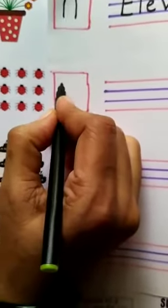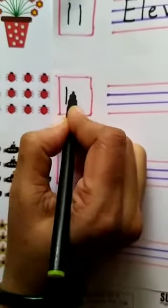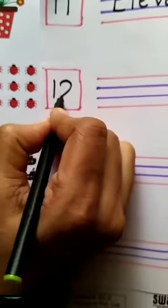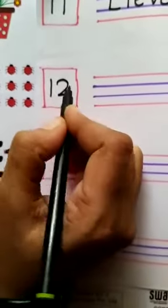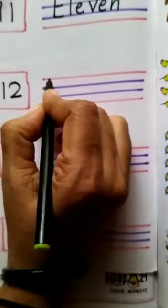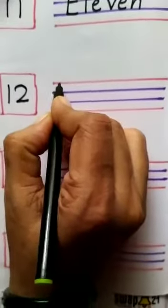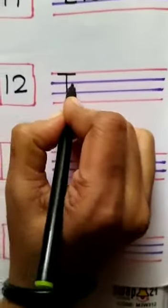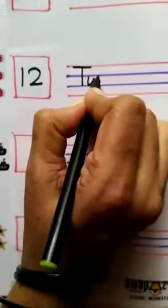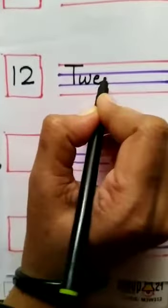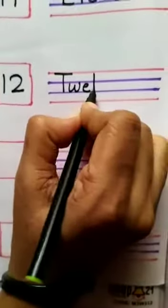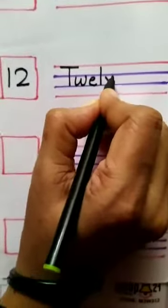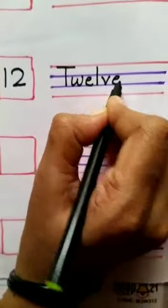Here we will write number 12 and here we will write the spelling or number name of 12: T, W, E, L, V, E.